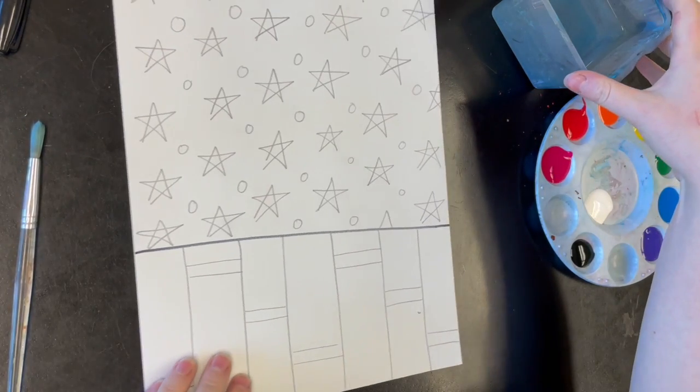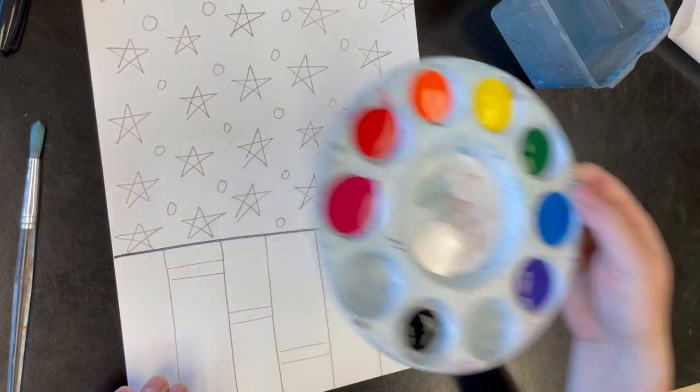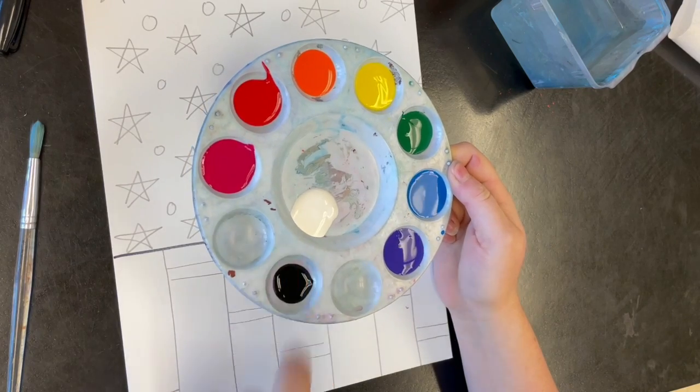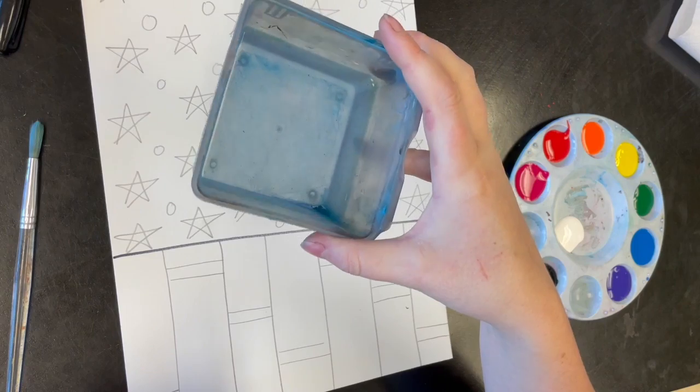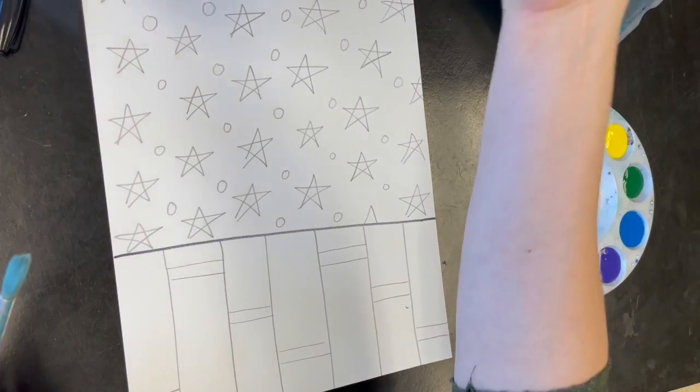To use paint, you're going to have a paint palette with all the colors of the rainbow. This is shared with the person next to you. You're going to have a cup of water, shared with the person next to you, and you're going to need a paper towel and a paintbrush.